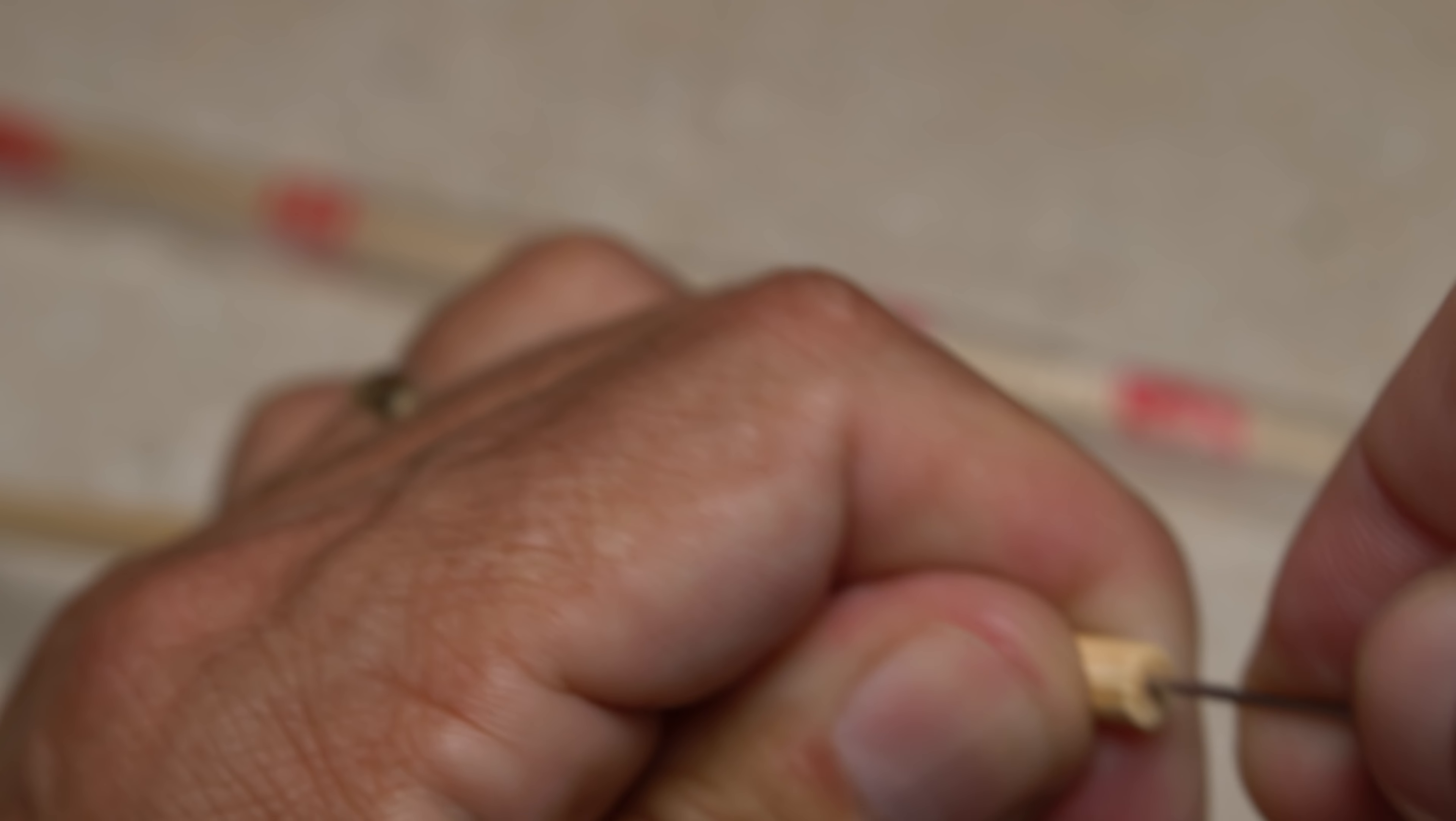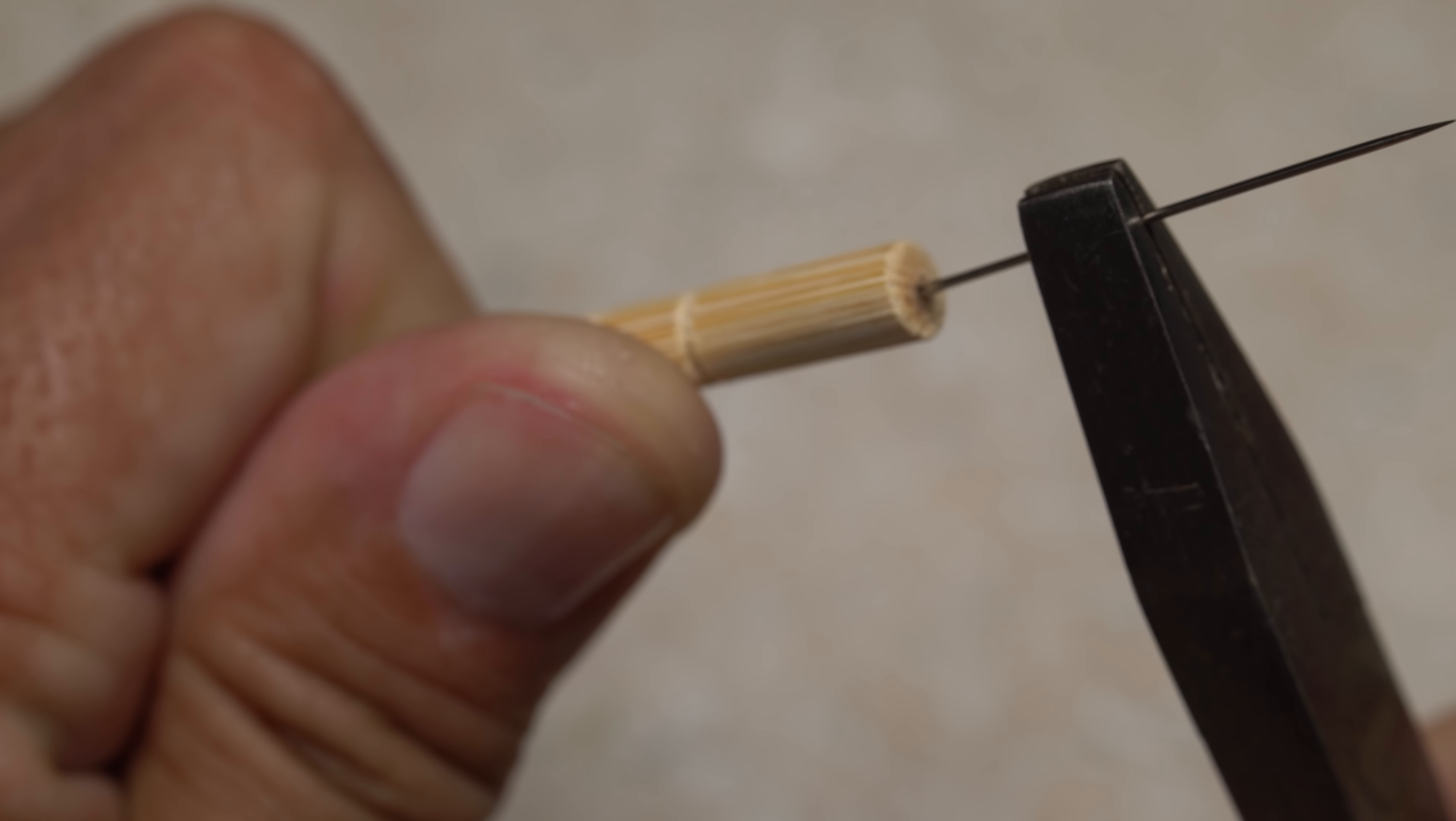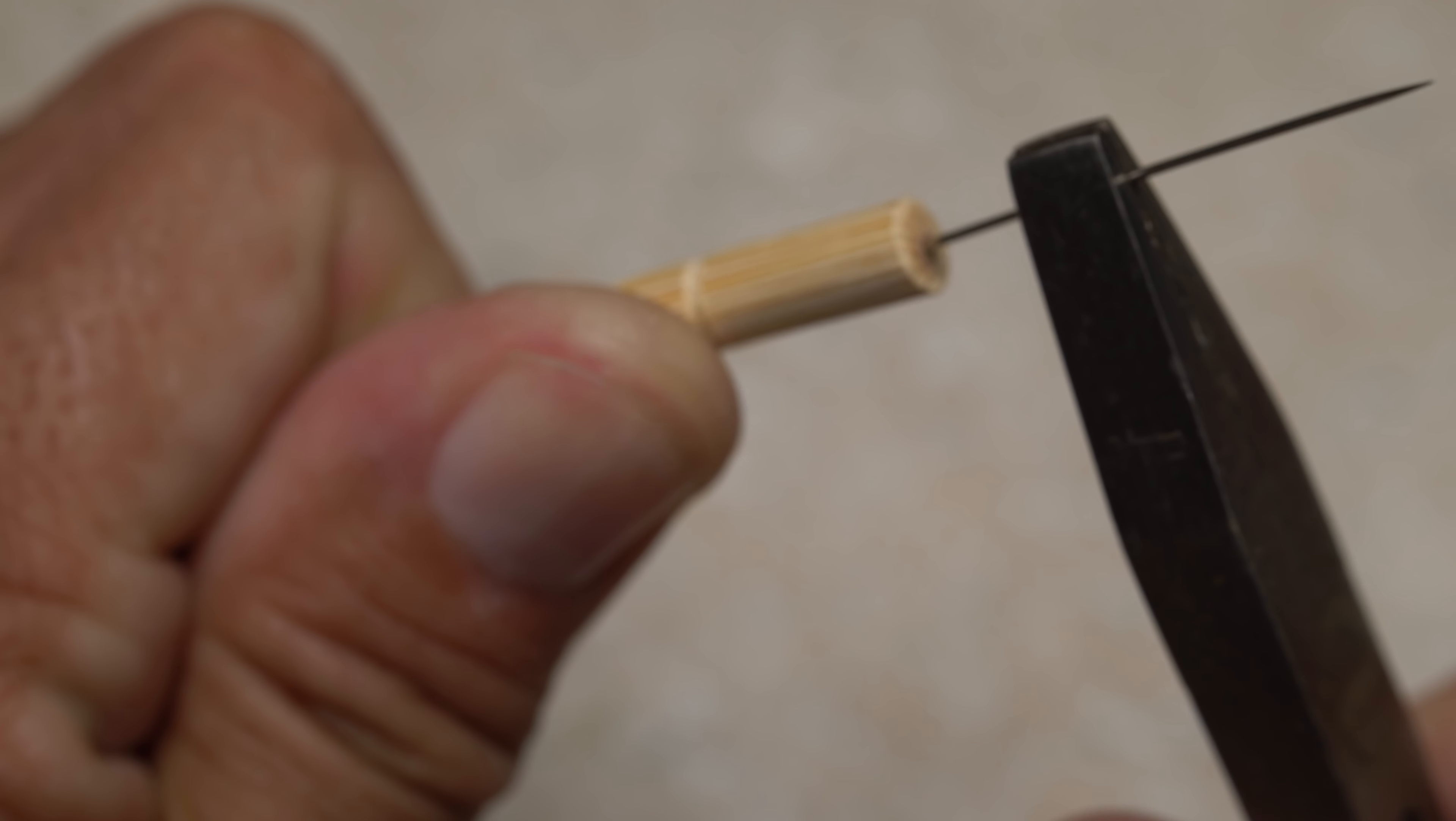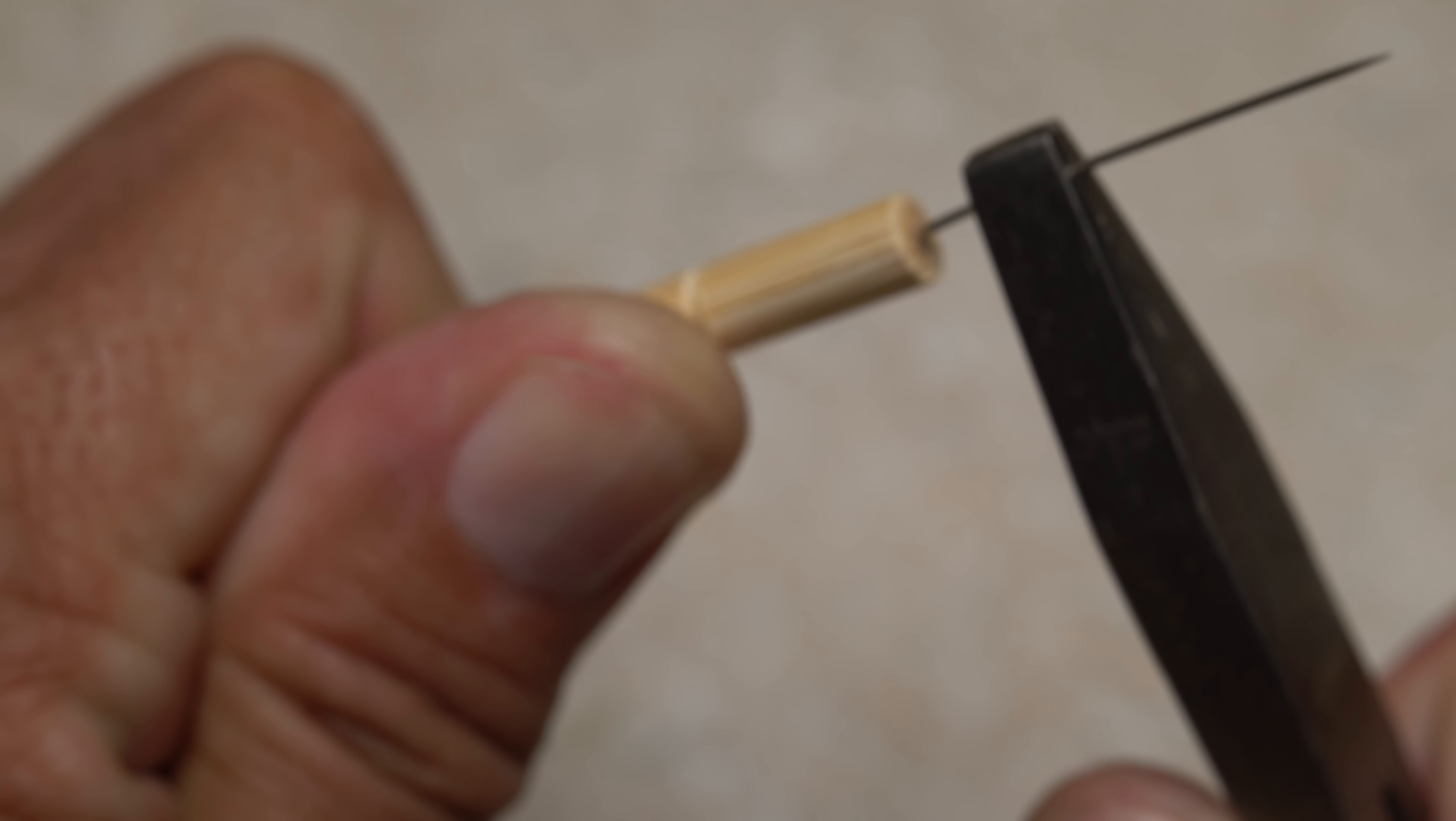Use your normal bodkin to start a hole in the center of the butt of an ordinary chopstick. Insert the eye end of the shortest, thinnest sewing needle you can find into the hole and drive it in further with a pair of pliers.